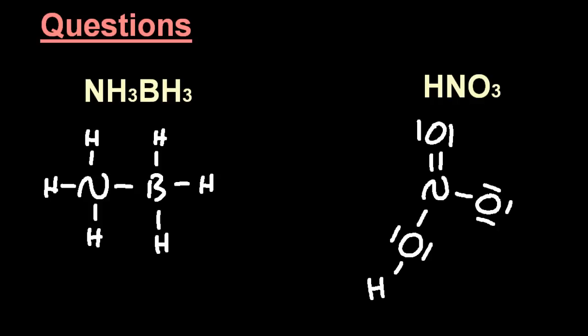There's one there. Boron has three electrons. So that must be a dative covalent bond from the nitrogen. And oxygen, six valence electrons. It's also another dative covalent bond from the nitrogen.